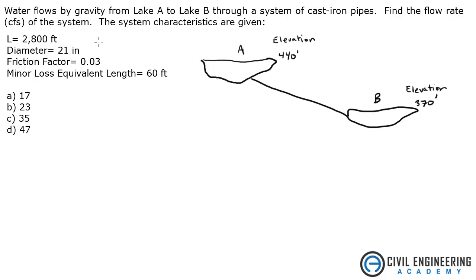The system characteristics are given. We are given length, diameter, friction factor, and a minor loss equivalent length. We are also given the lake system with elevation — elevation A at 440 and elevation B at 370.